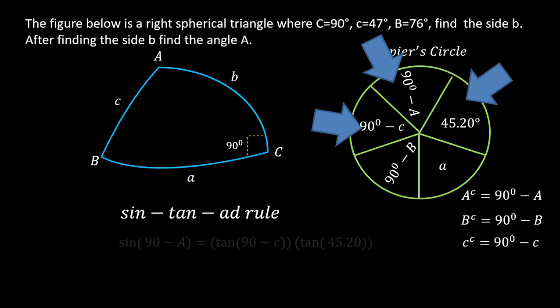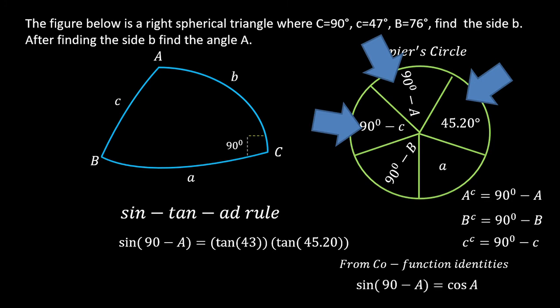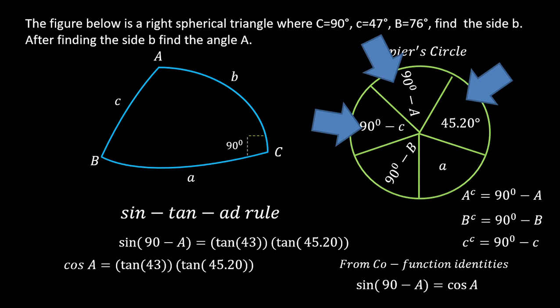Applying the sin-tan-add rule: the sin of the middle part equals the product of the tangents of the adjacent parts. Substituting c = 47 degrees, we get 90 minus 47 = 43. Using the co-function identity — sin(90 − angle) = cos(angle) — this becomes: cos A = tan 43 × tan 45.20.